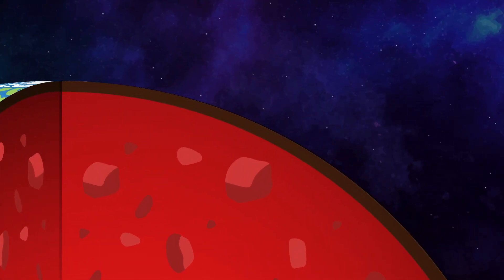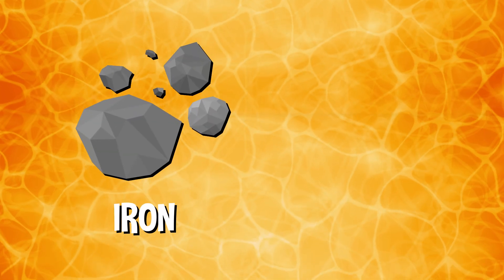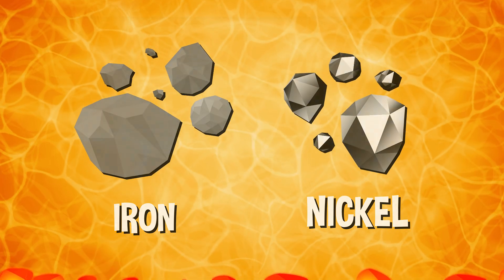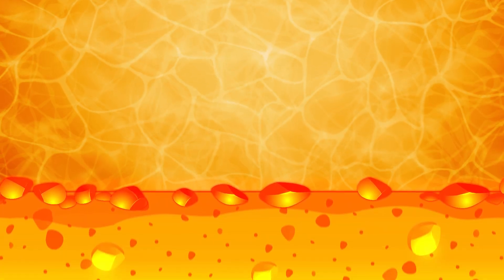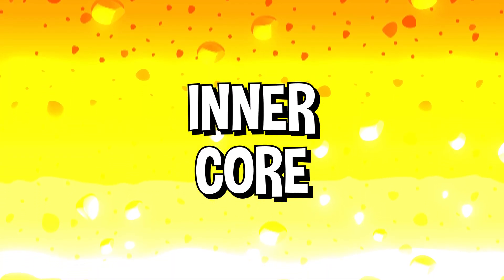Beneath the mantle is the Earth's core, which is split into two sections, the outer core and the inner core. The outer core is big, almost 1,400 miles thick, and it's mostly made of liquid iron and nickel. The inner core is incredibly dense. Just like the outer core, it's mostly made of iron and nickel. But unlike the outer core, experts believe it's hard rather than liquid.